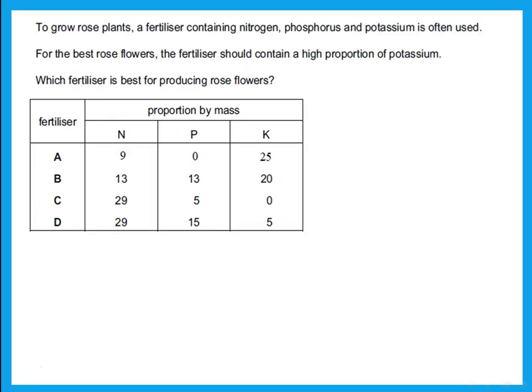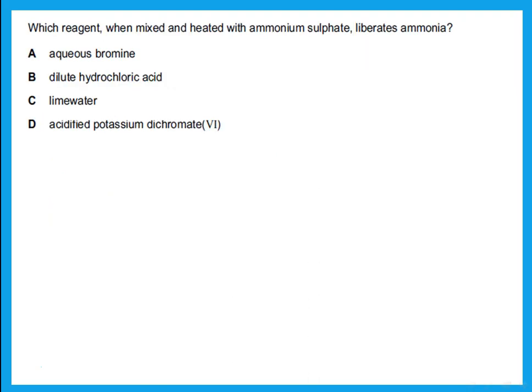To grow rose plants, a fertilizer containing nitrogen, phosphorus, and potassium is often used. For the best rose flowers, the fertilizer should contain a high proportion of potassium. So you're looking for something that has nitrogen, phosphorus, and potassium, and the one that has the higher potassium. A has the higher potassium, but it doesn't have any phosphorus, so you cannot choose that. You have to choose B.